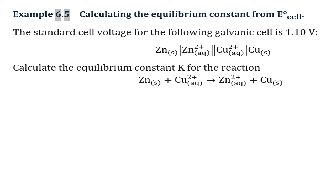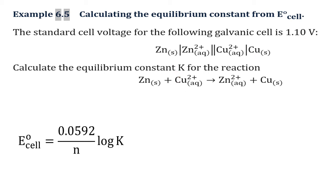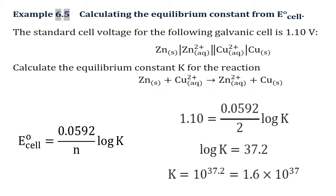For example, the Daniel cell connecting zinc and copper has a standard cell voltage of 1.10 volts. Calculate the equilibrium constant. You know E°_cell and n = 2 electrons transferred between zinc and copper ion. Substituting everything in, you get a very high K value, meaning this reaction from left to right has equilibrium strongly on the right side — producing a lot of product.